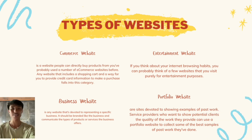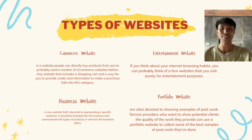The second type is a Business Website — any website devoted to representing a specific business. It should be branded like the business and communicate the types of products or services it offers. Examples are Apple, Coca-Cola, and Nike. The third one is an Entertainment Website.